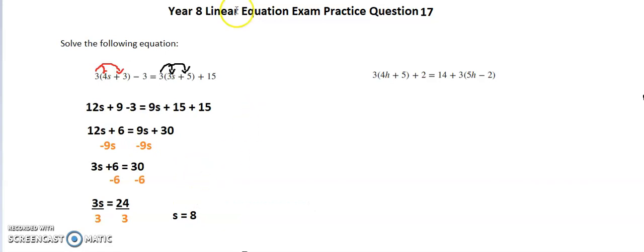The same thing applies to my next question: 3 in brackets 4h plus 5 plus 2 equals 14 plus 3 in brackets 5h minus 2. We need to get rid of these brackets, so the 3 must times by everything inside this first bracket and the 3 here must times by everything in our second bracket.